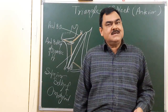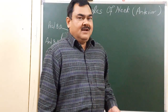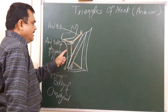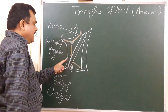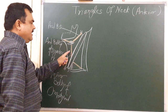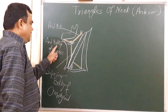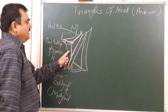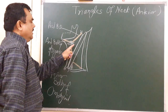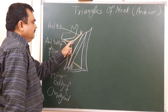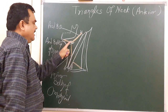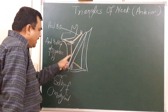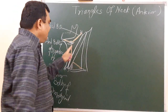We will discuss the anterior triangle of the neck. It is divided by the anterior belly of the digastric, posterior belly of the digastric, and superior belly of the omohyoid into the carotid triangle, digastric triangle, muscular triangle, and submental triangle. Now we will discuss the carotid triangle.